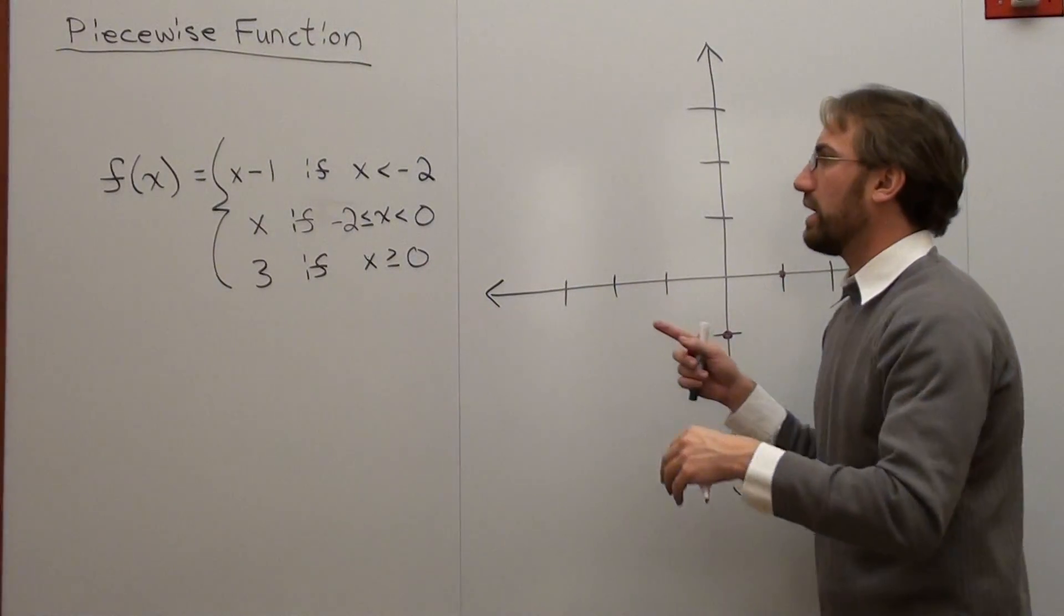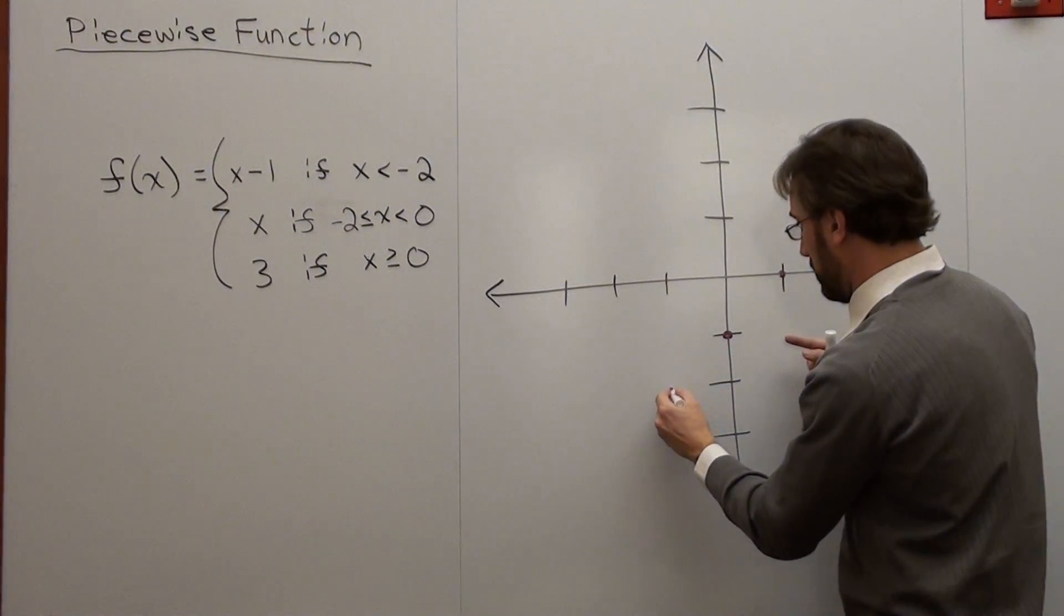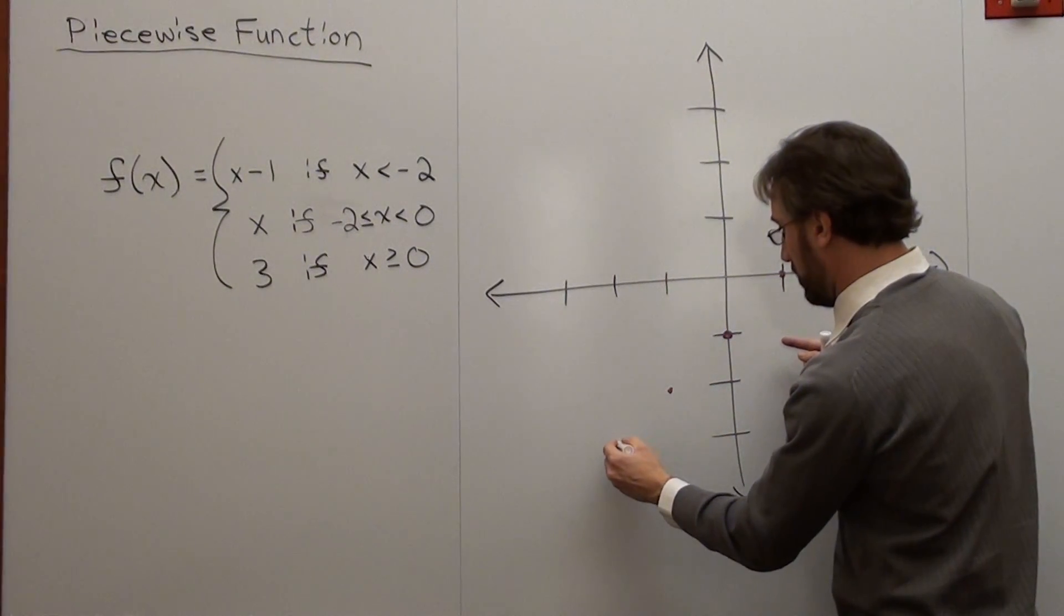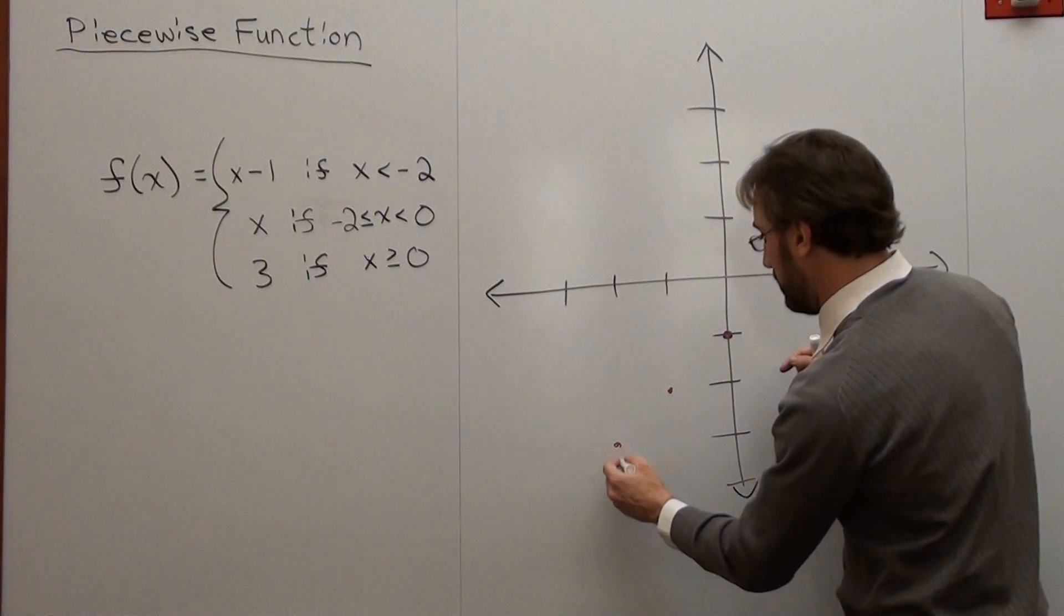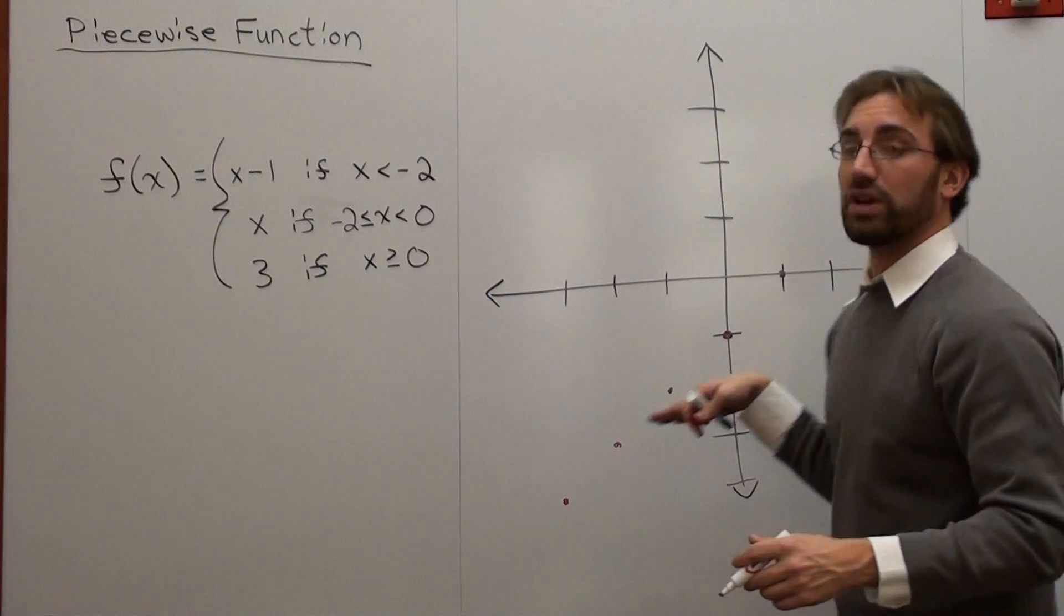So what you do is this. You go to negative 2. Well, let's keep going here. Down 1 over 1. Down 1 over 1. Yeah, let me put another value there. Down 1 over 1. Okay.